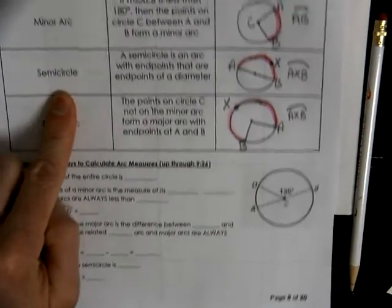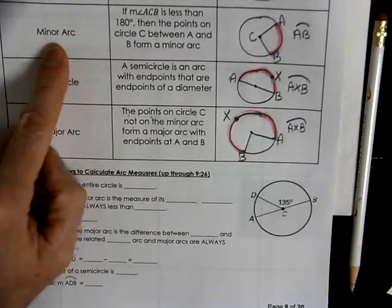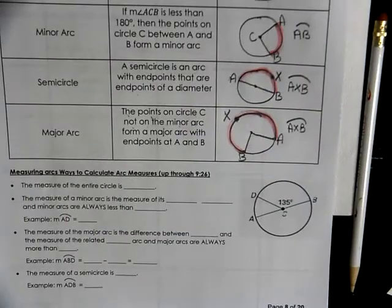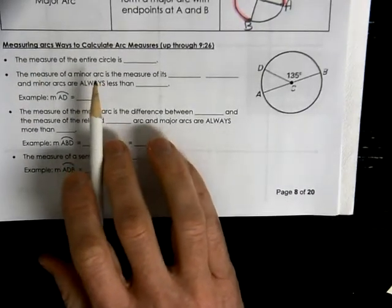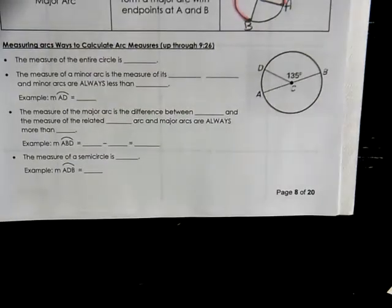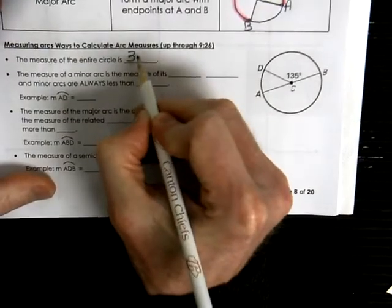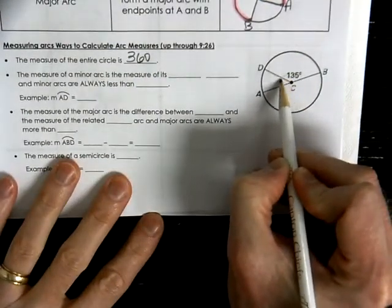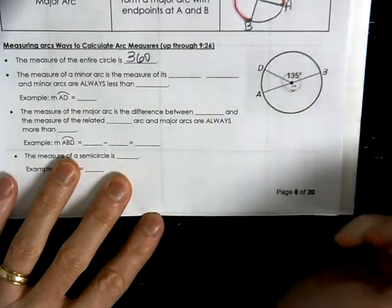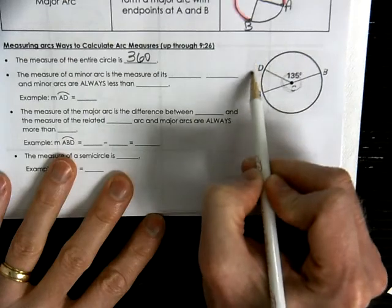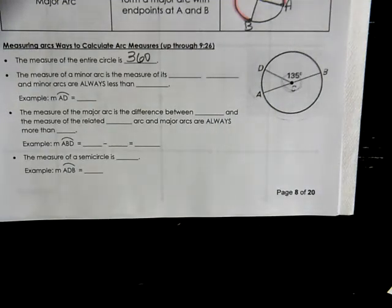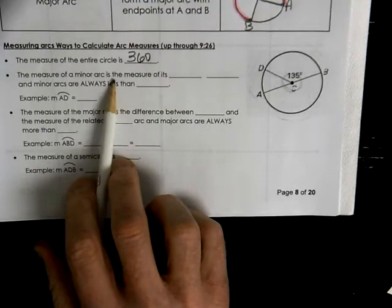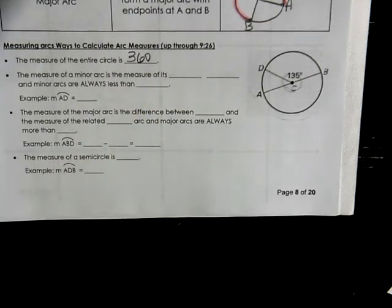A major arc is going to be more than 180 degrees, a semi-circle is going to be 180 degrees, and a minor arc is going to be less than 180 degrees. The measure of the entire circle — all the way around — is 360 degrees. So all of these angles in here are going to add up to 360, and all these arcs will also have an angle measure of 360 degrees. The measure of a minor arc is the measure of its central angle.